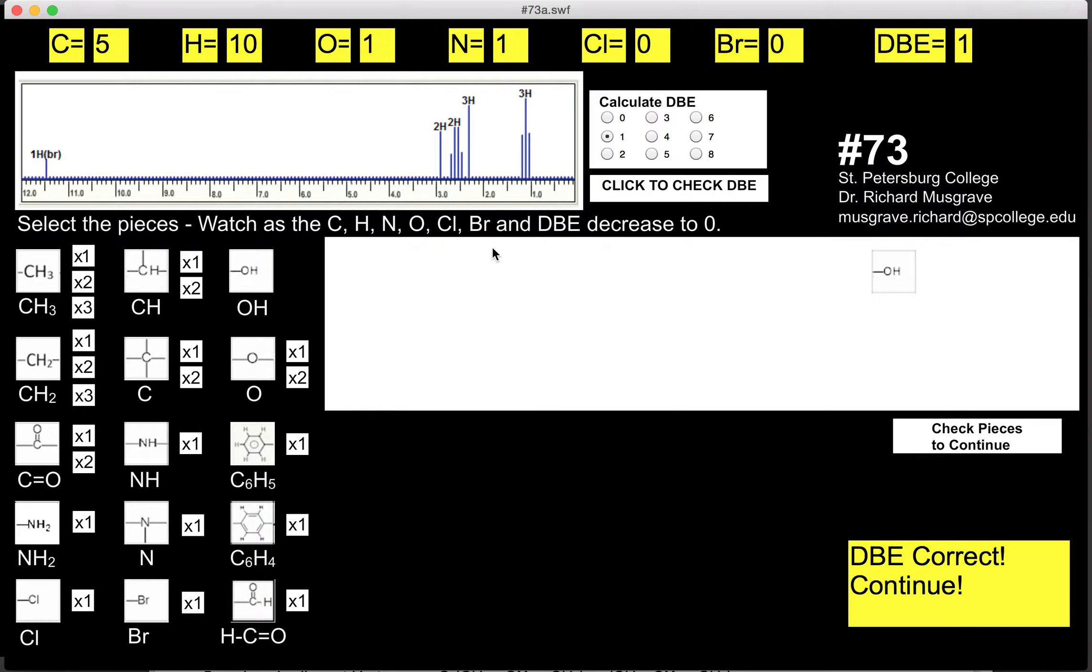And we have also, let's see, a CH2, a CH2, and a 3H3, and a CH3. So two CH2s and two CH3s.